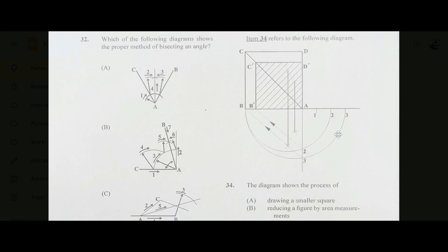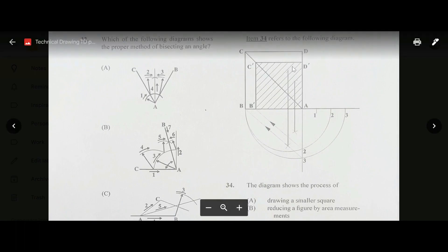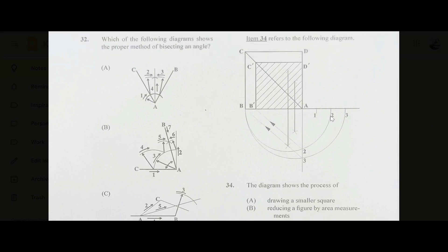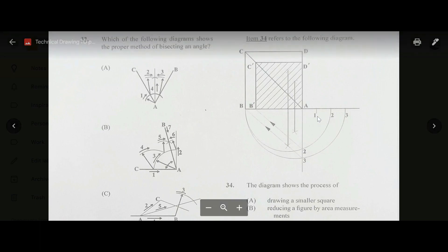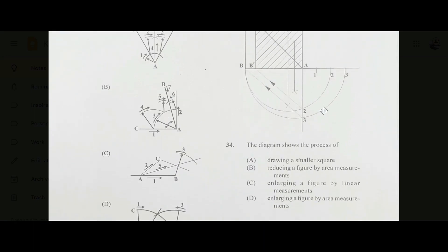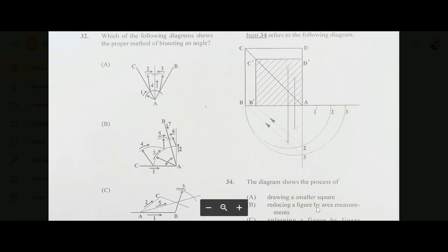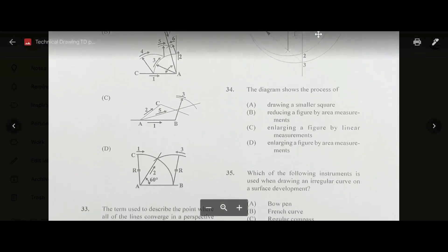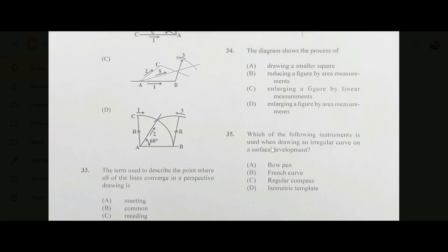Number thirty-four: this is a tricky question. What's happening is they are reducing the size of the square in a ratio — you can see markings 1, 2, 3. The diagram shows the process of reducing a figure by area measurements. The answer is B. Number thirty-five: which instrument is used when drawing an irregular curve on a surface development? The answer is B, a French curve.